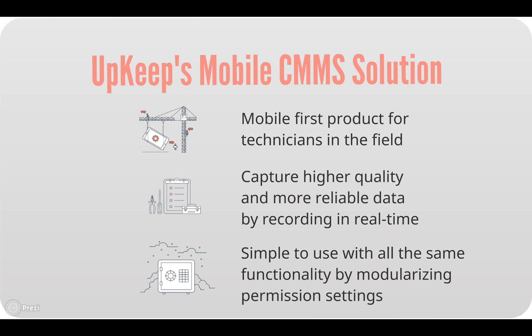UpKeep's mobile CMMS — what we really are is a mobile-first product geared towards technicians out in the field. That means they can record data and capture higher quality, more reliable data by recording in real time. They can do this all from a mobile device, whether that's doing an inspection sheet and taking pictures of a piece of equipment that just broke down, or getting a notification as soon as a work order is assigned to them. We see UpKeep as a group collaboration tool that's extremely simple and easy to use, with all the same functionality as a normal CMMS, but also with the ability to modularize all of that with permission settings.